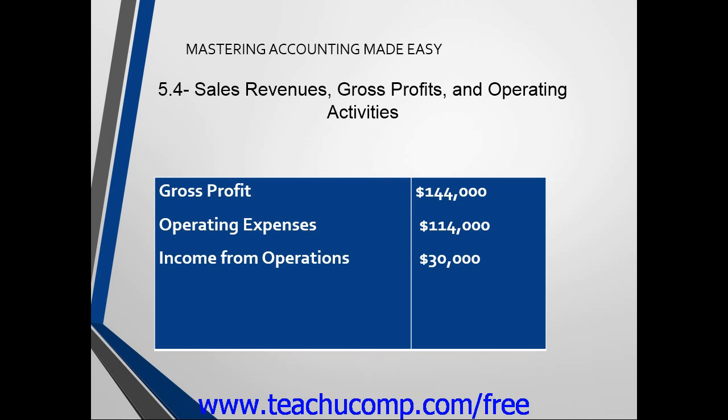Operating expenses are the next component in measuring net income for a merchandising company. Companies take the gross profit and subtract operating expenses to determine income from operations. In our example, we take the gross profit, which is $144,000, and subtract operating expenses of $114,000 in order to find the income from operations, which is $30,000.